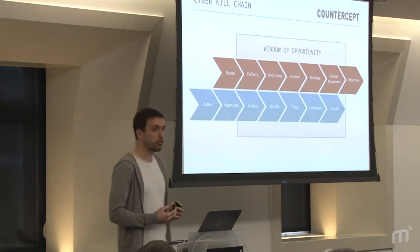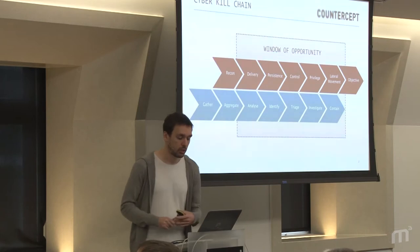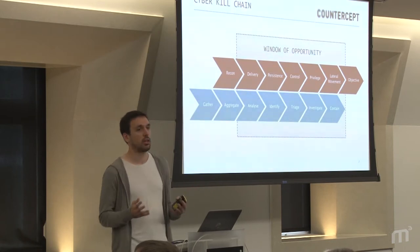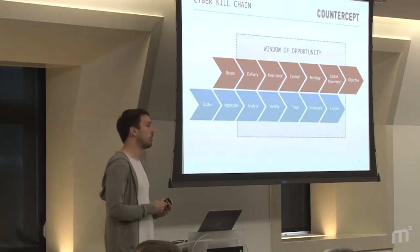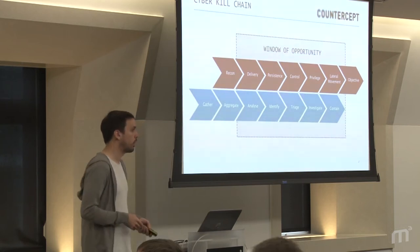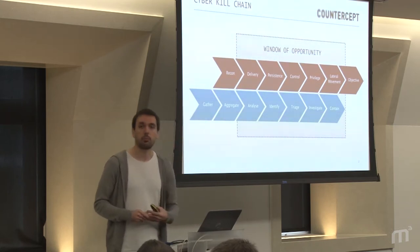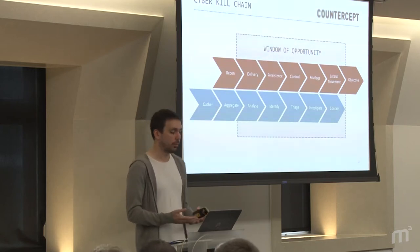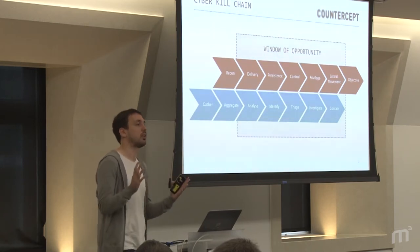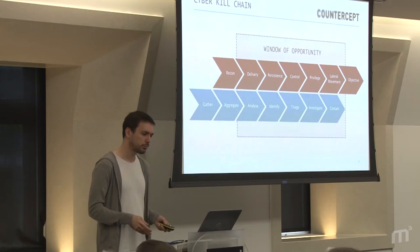In security, people often talk about something we call the cyber kill chain. From the offensive standpoint, the red chain was popularized by Lockheed Martin a few years back. It divides the stages of attack up into different areas and then tries to reason about what we can do to disrupt different parts of that chain. More recently, some guys from Microsoft made a blue team equivalent and lined them up. Our job in cybersecurity is we've got a window of opportunity there. We need to execute our kill chain quicker than the bad guys execute theirs.